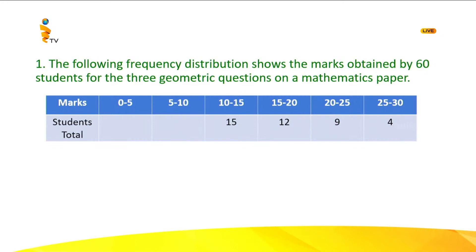They haven't given the number of students in the class intervals 0 to 5 and 5 to 10. They have given that there are 15 students who obtained marks from 10 to 15, 12 students from 15 to 20, 9 students from 20 to 25, and 4 students from 25 to 30.